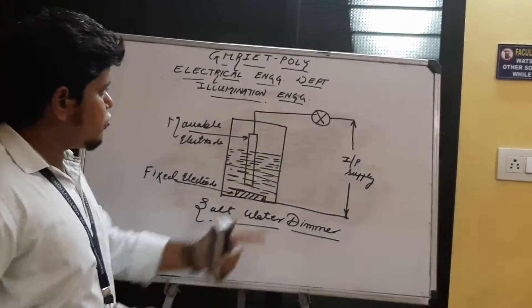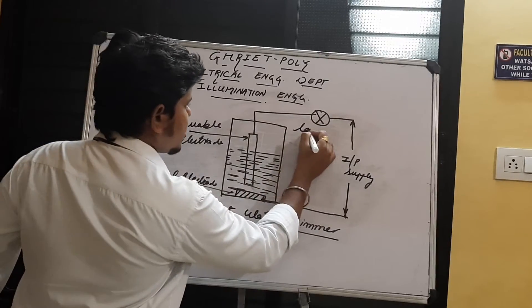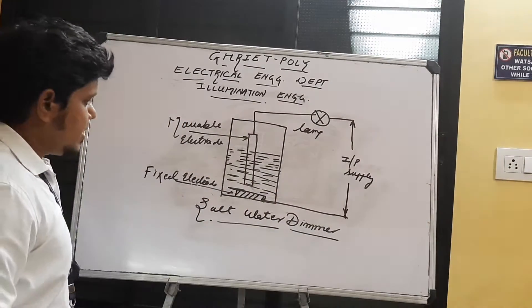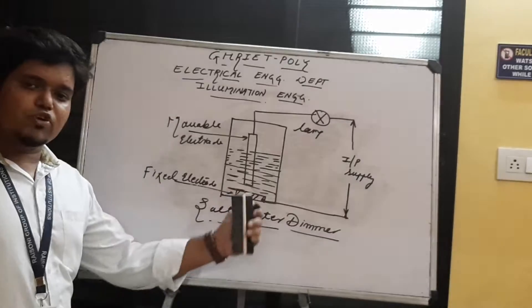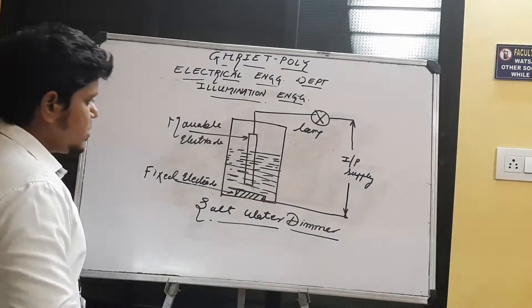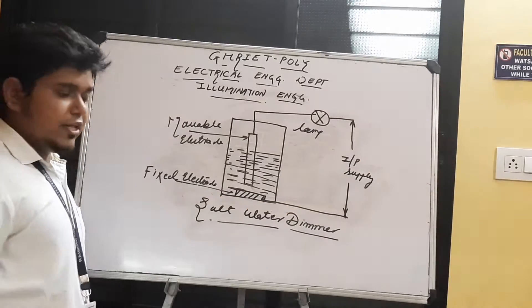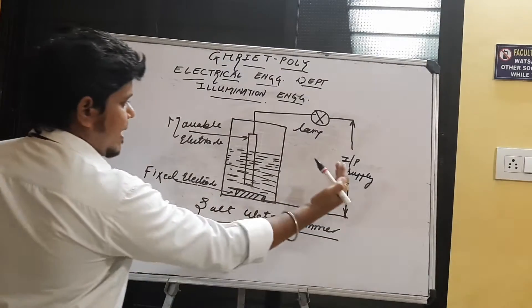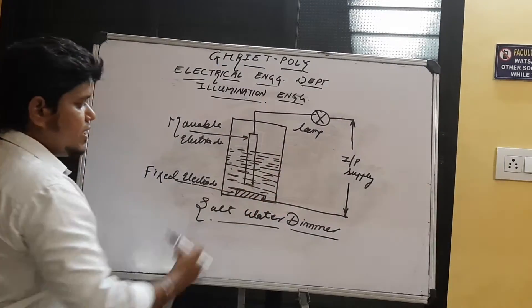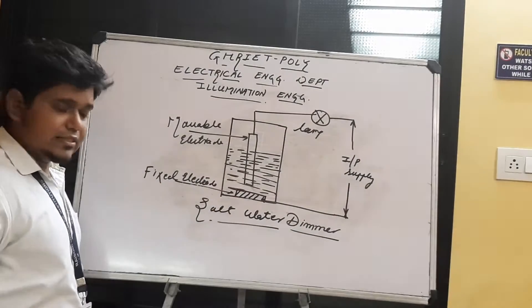The concept is we have to control the illumination by the salt water. As you know, salt water has high electricity conductivity. Here we have the fixed electric rod and the movable electric rod. When we apply the input supply to this container and this circuit,